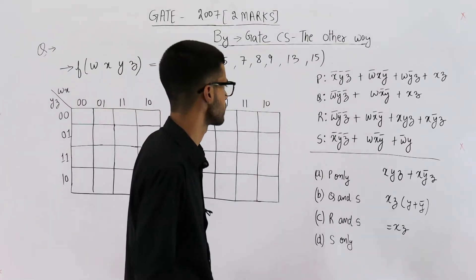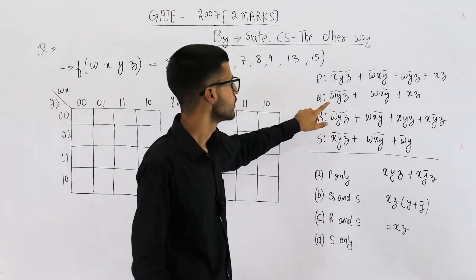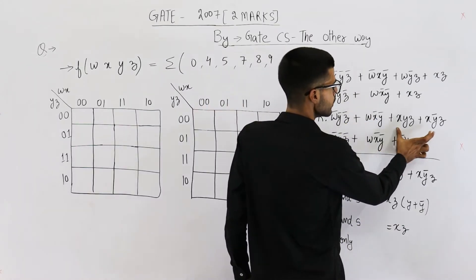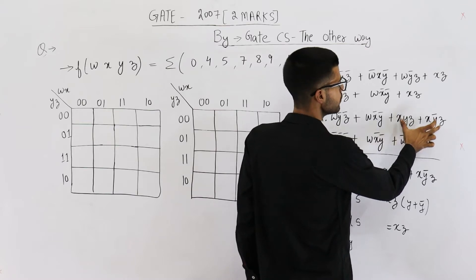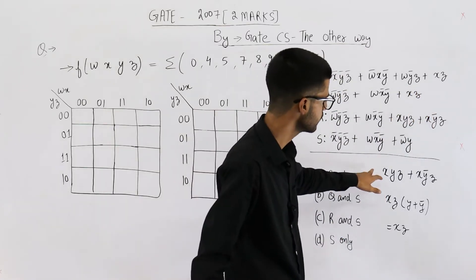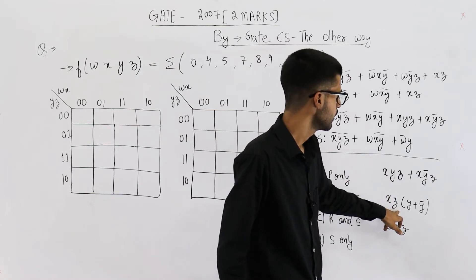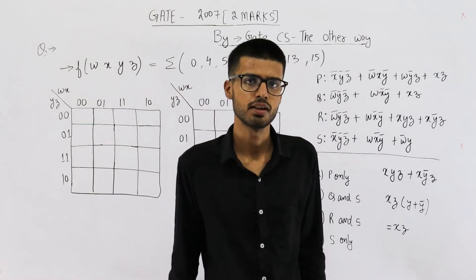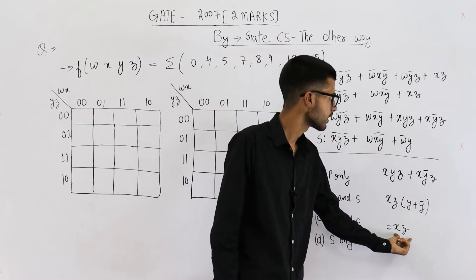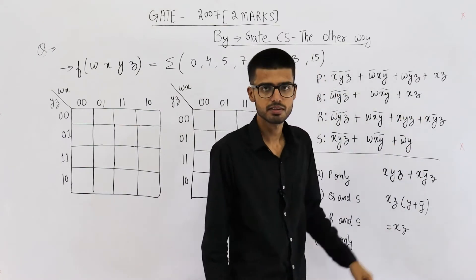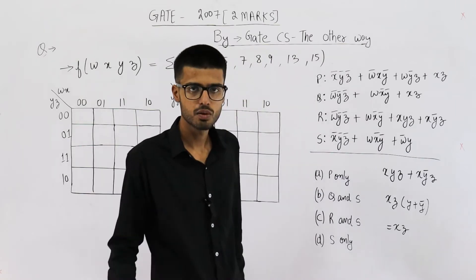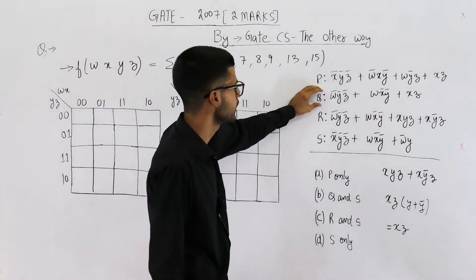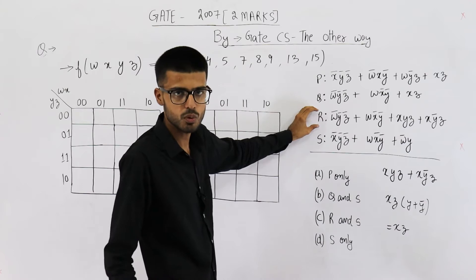Let's analyze these functions. You can see Q and R are similar. This term is present as is, this term is present as is, and these two — xyz and xy̅z — can be minimized to xz. We have taken xz common and we are left with y + y̅, and y + y̅ is 1. That means these two can be simplified to xz. So Q and R are equivalent to each other.